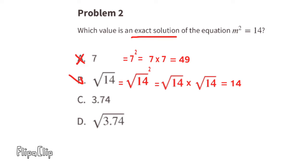Option C: 3.74. If m were 3.74, then m squared would be a little less than 14. Therefore, 3.74 cannot be a solution to the equation m squared equals 14.